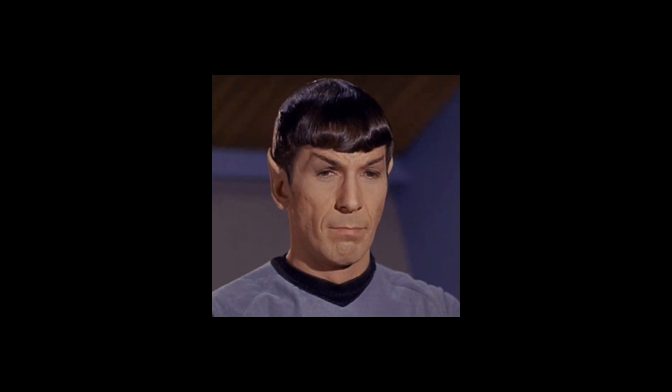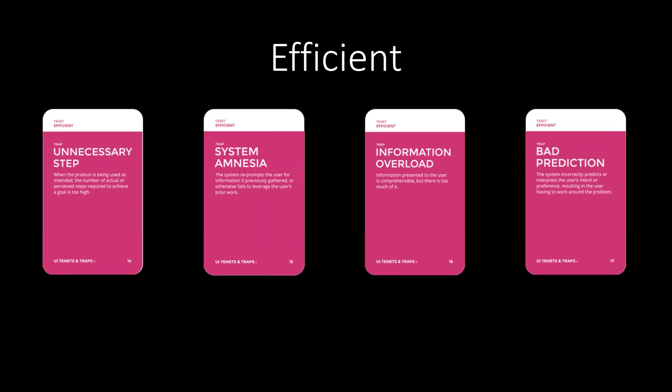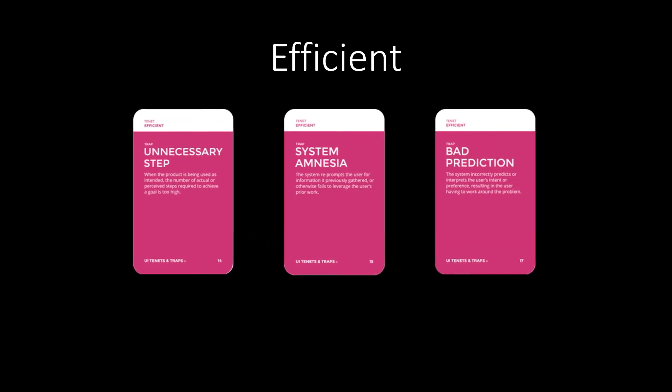The last trap in responsive is captive wait — you know, when you're on YouTube and there's an ad you suddenly can't skip for four seconds. You can't back away from it and can't change the clip, so you just have to sit there and wait. That's captive wait. So let's go into the next tenet, which is 'efficient.' Being efficient is something most of us strive for — doing things in as few steps as possible or as fast as possible.